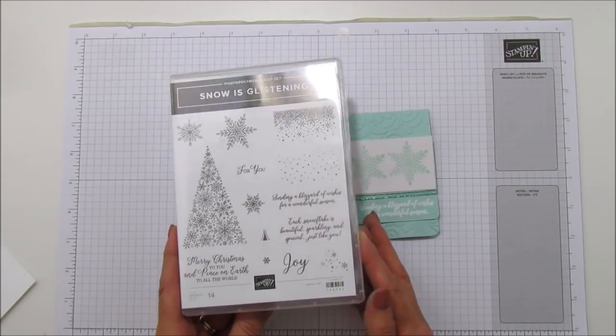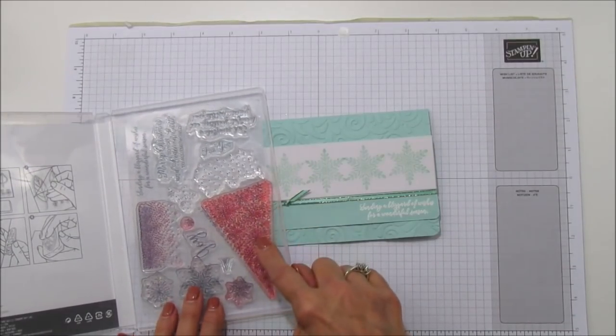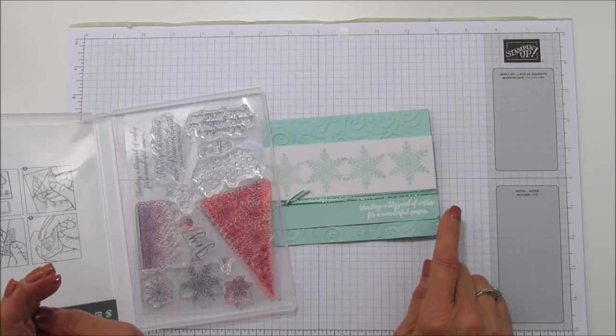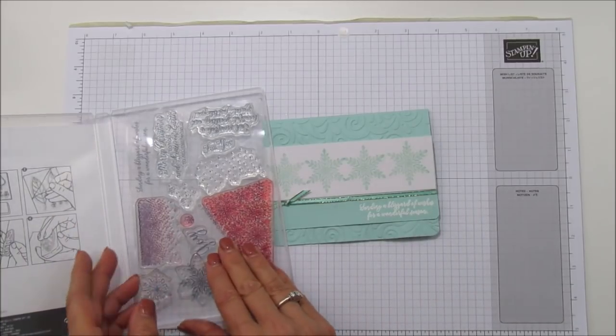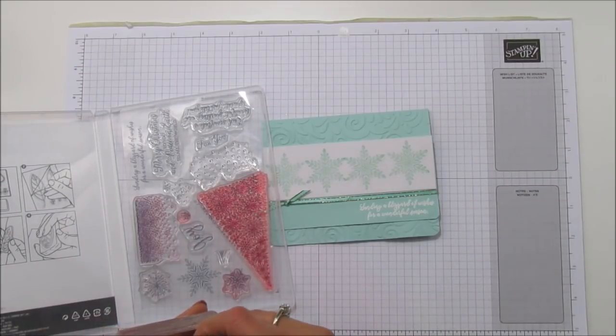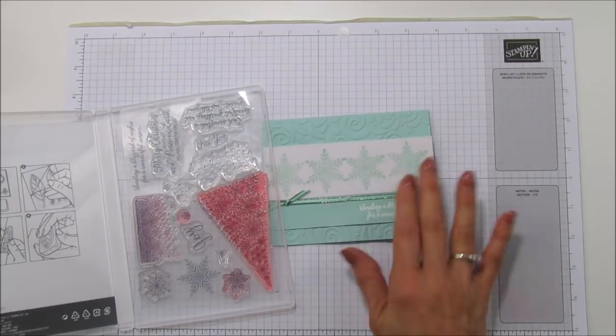I really loved that one and so it's a gorgeous tree. I am using the sending a blizzard of wishes for a wonderful season on the front and then we are using the larger of the snowflakes and we're going to stamp those onto our velvet sheet.